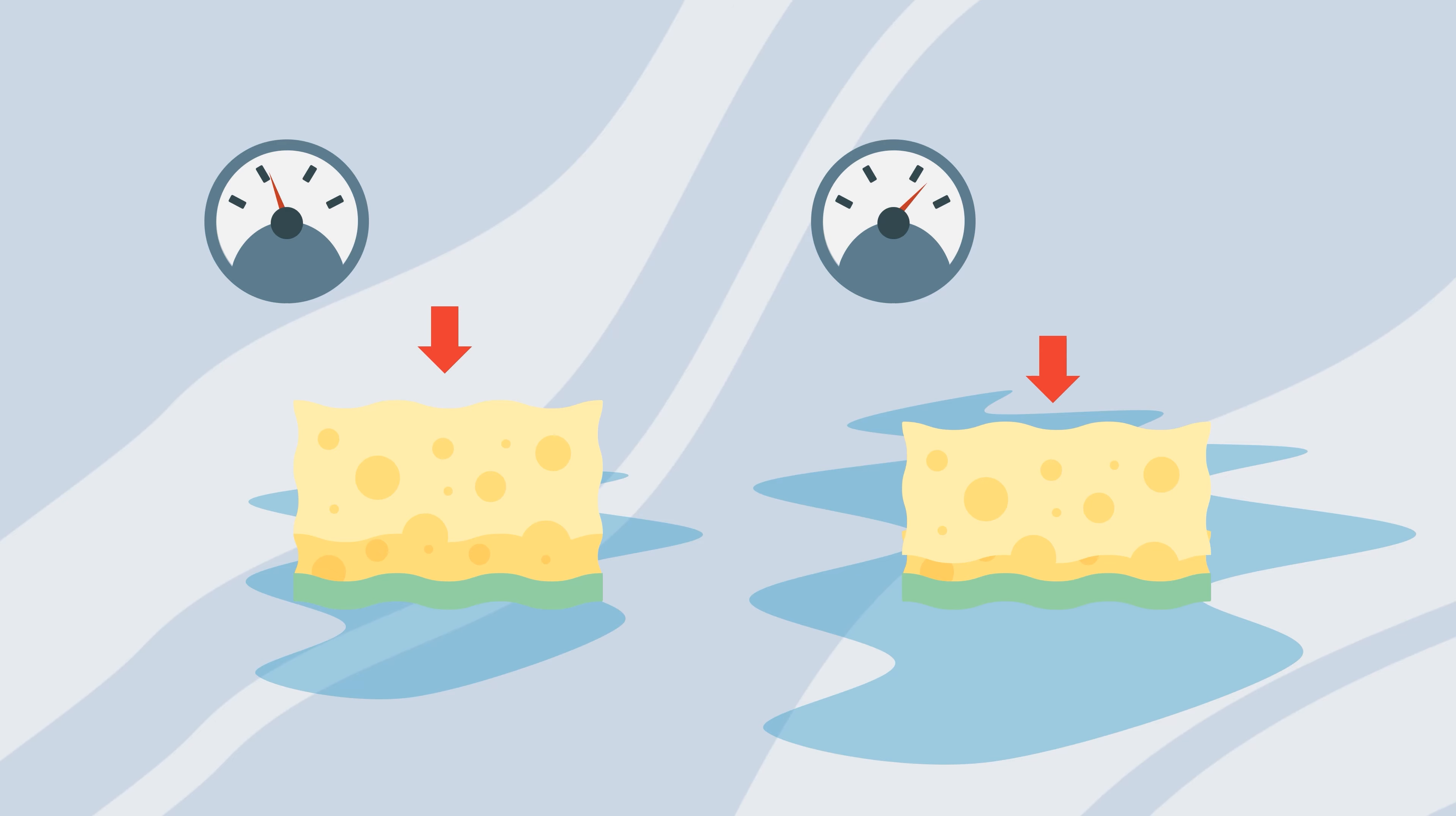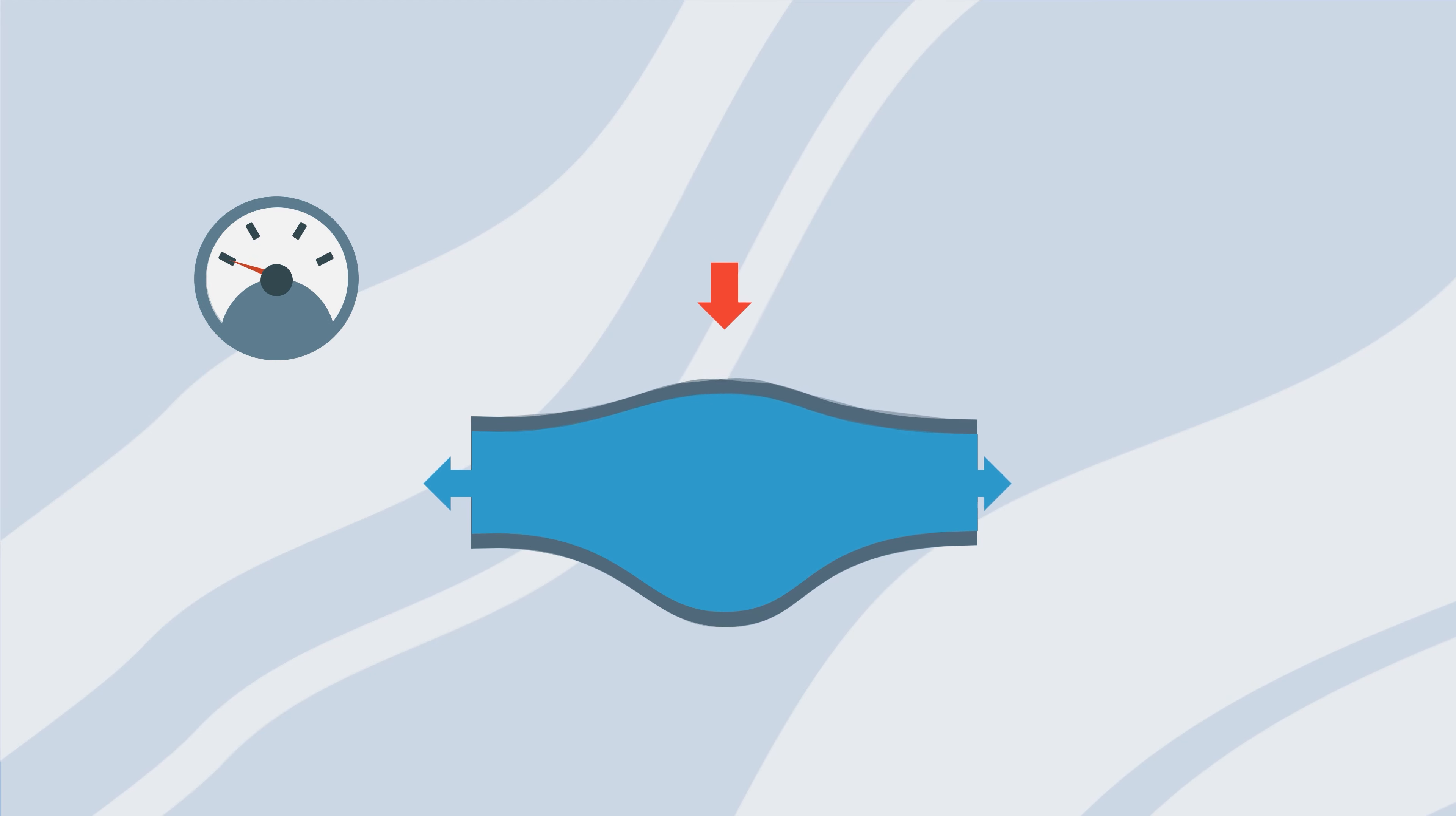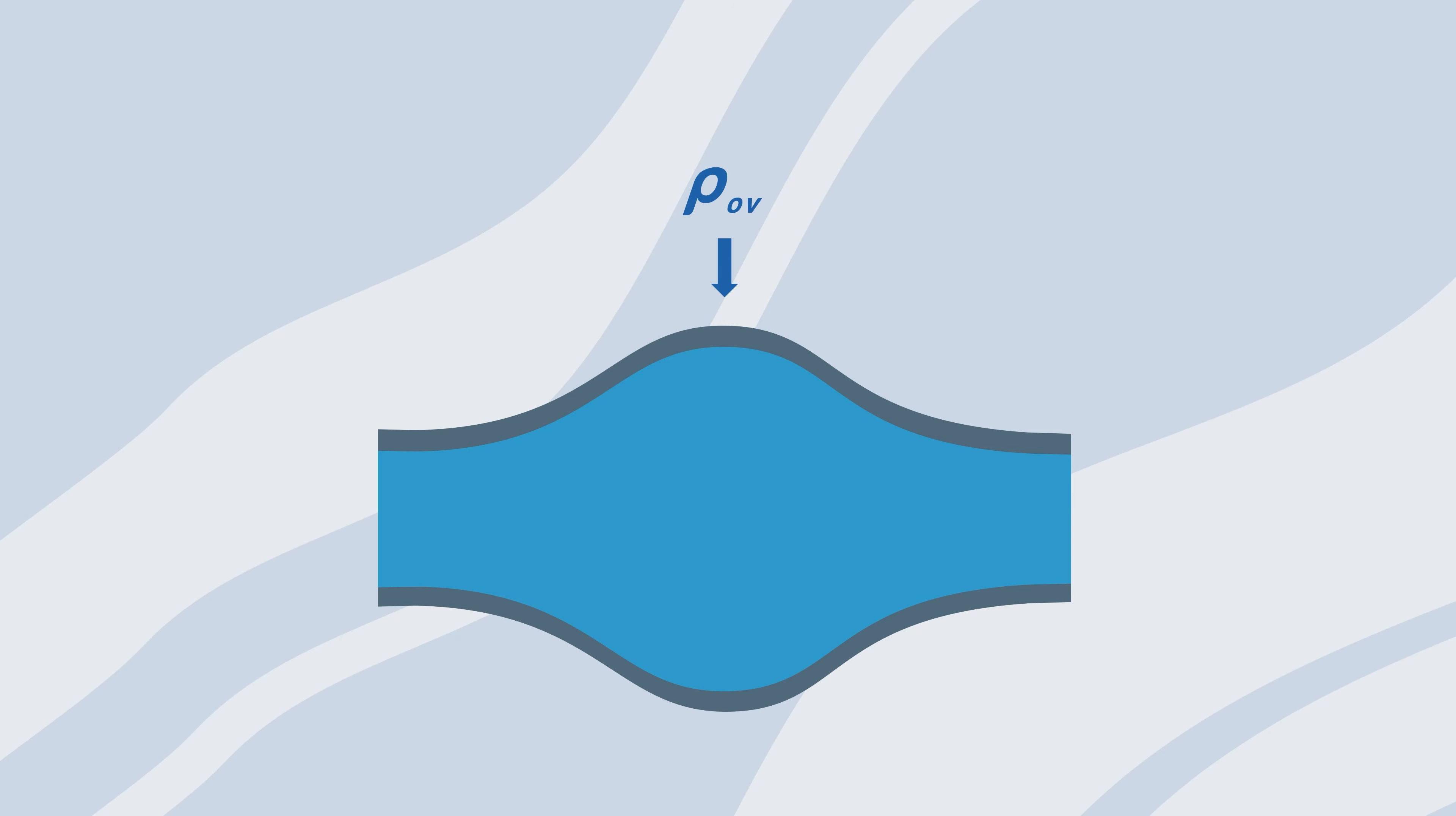Similarly, rocks are subjected to an overburden or compaction pressure that reduces their pore volume. If we analyze the system shown here, the pore is subjected to three types of pressures: one external and two internal.